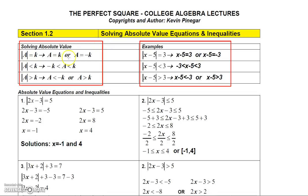The first one is solving an absolute value equation. We want to make sure you understand what these values and letters represent. This is the absolute value symbol. A represents any algebraic expression, and K is any positive real number — K must be a positive real number. So if you have an absolute value expression equal to K, you can write that as two equations: you'll solve A equals K, and also A equals negative K.